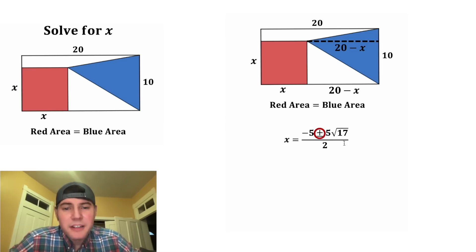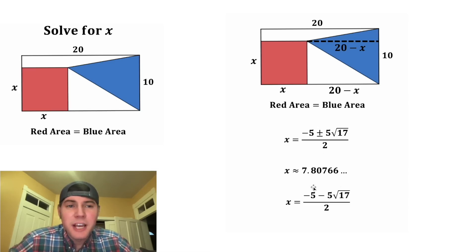Since we have this plus minus, that means we have two possible values for x. We have the positive version and the negative version. The only difference is the plus or the minus. This first one is equal to approximately 7.80766. And the second one is equal to approximately negative 12.80766.